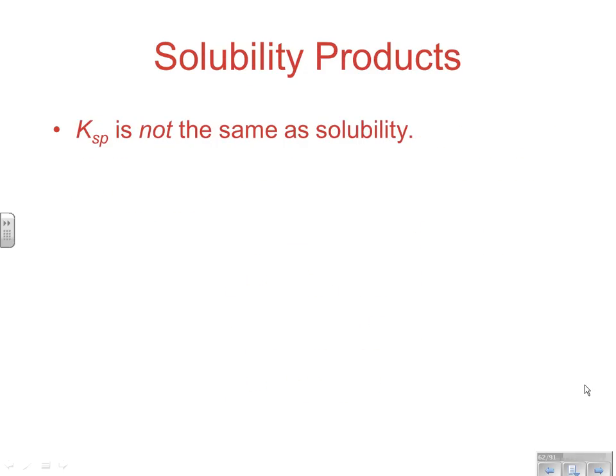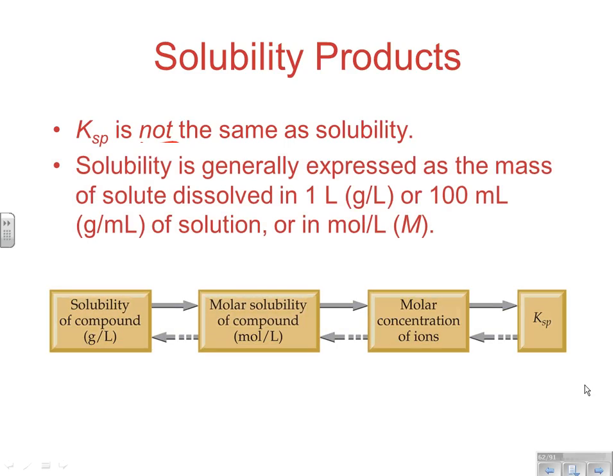Remember, Ksp is related to solubility, but it is not the same as solubility. That's one of the things people routinely get wrong on the AP test. Ksp is related to what the solubility concentrations are, but it's not the same thing. Solubility is generally expressed as the mass of solute dissolved in one liter — typically grams per liter or grams per milliliter. You can also express it in moles per liter, but grams per liter or grams per milliliter is more typical.